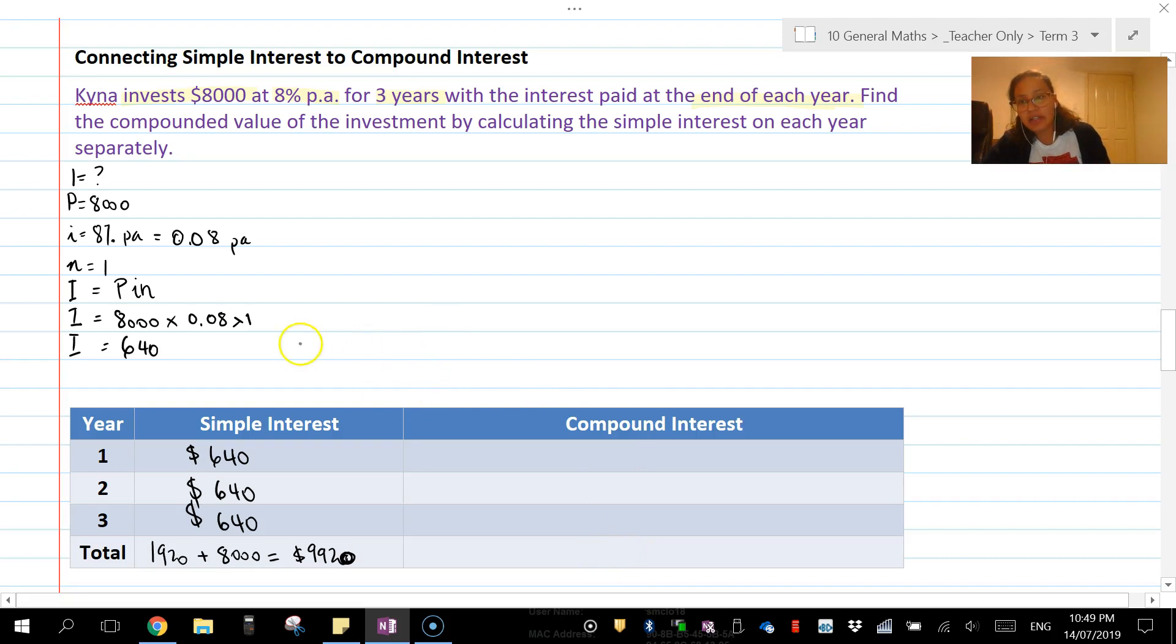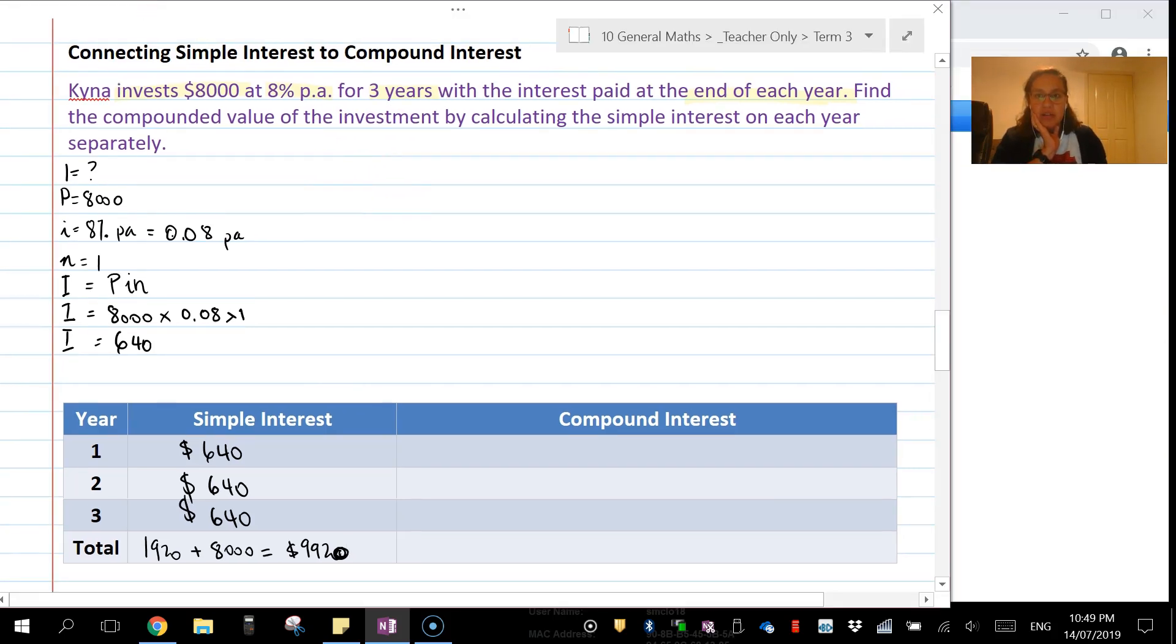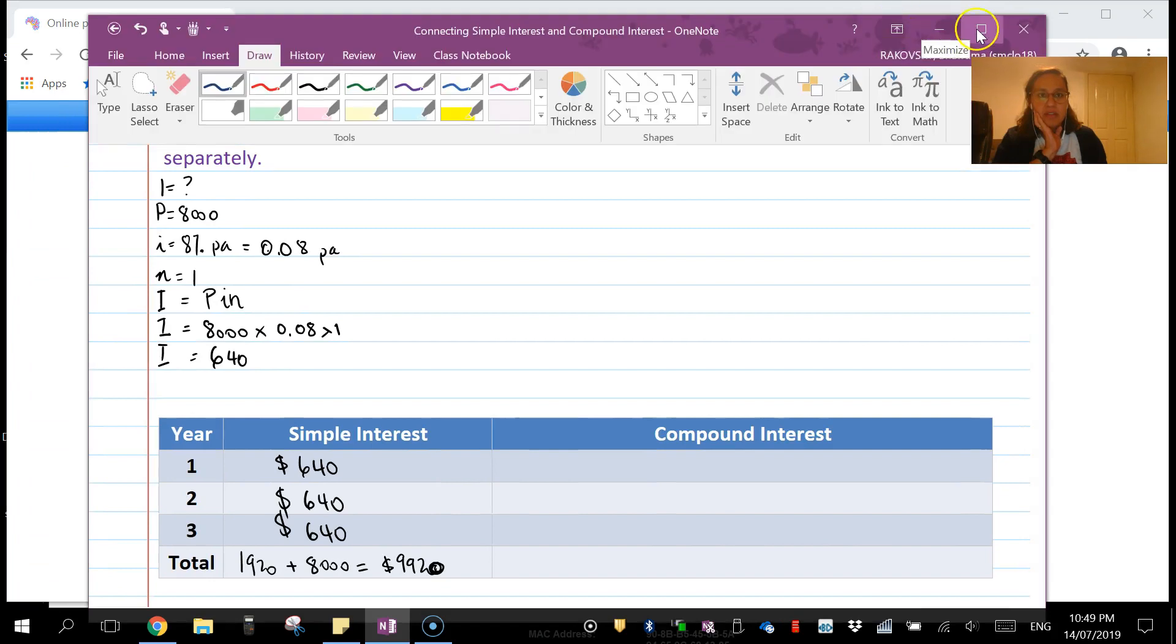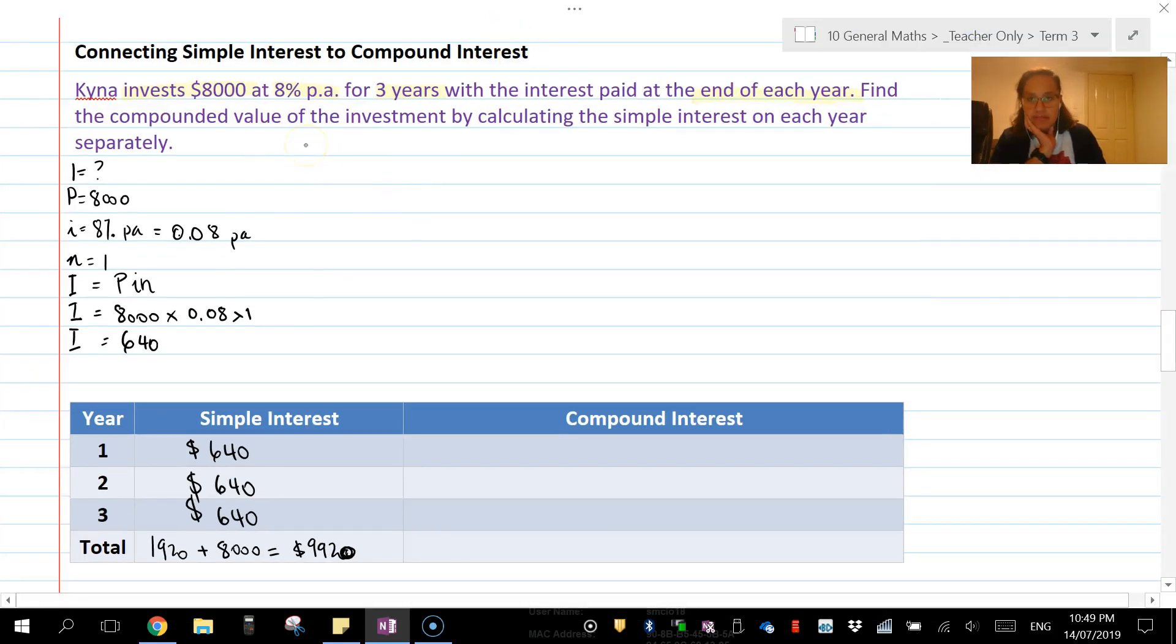Compound interest - the difference between simple interest and collecting interest at the end of each year is that compound means the interest goes back into the loan. First year interest: I = P times i times n, which is $8,000 × 0.08 × 1 = $640. Now we're going to reinvest that amount back in.